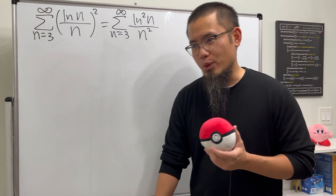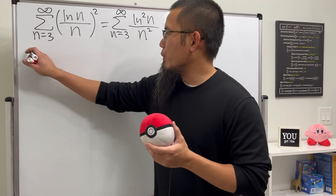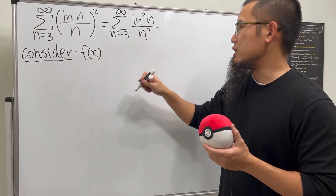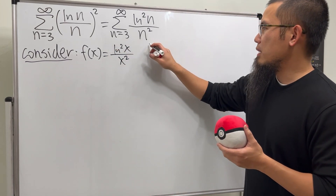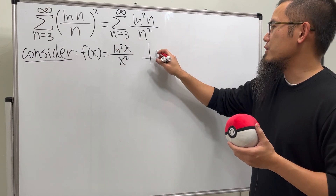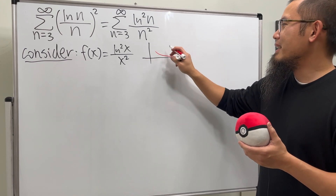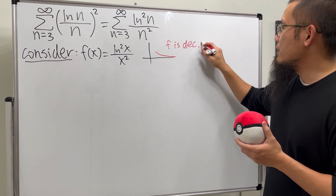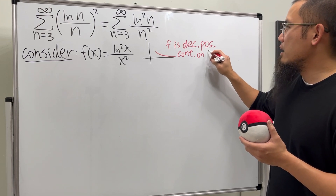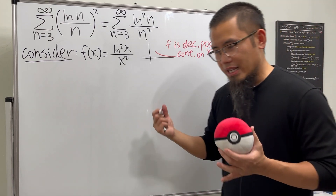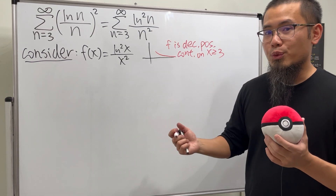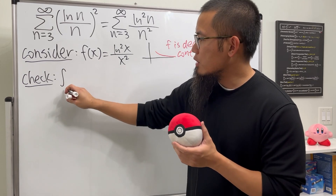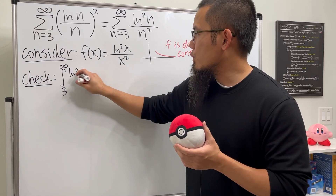So what do we do? The good old integral test, and we can also use this as a chance to review integration by parts. We consider the function — replacing all the n's with x's — and note that it is decreasing, positive, and continuous on the interval x ≥ 3, so we can legitimately apply the integral test.